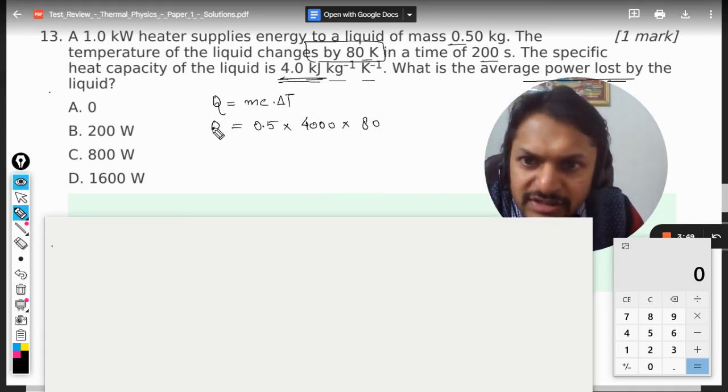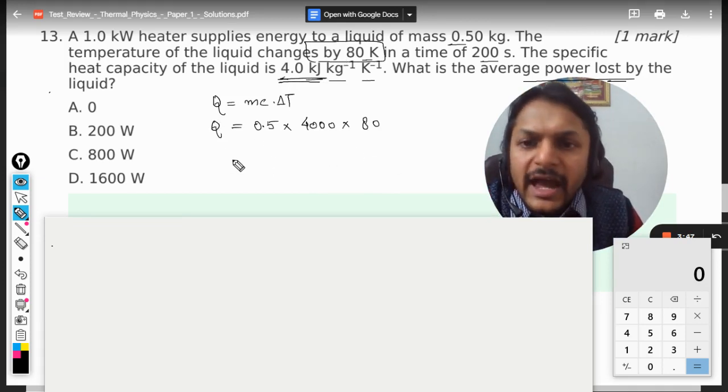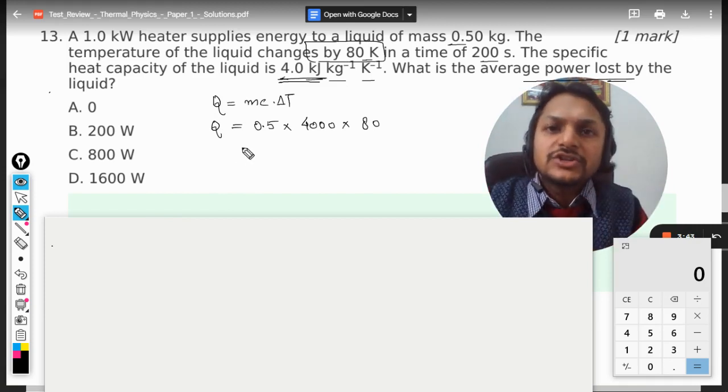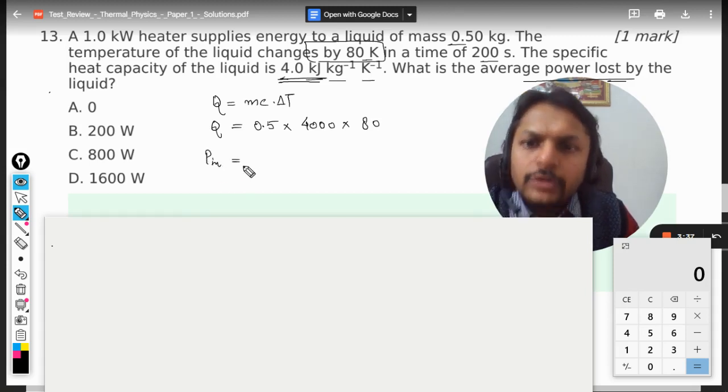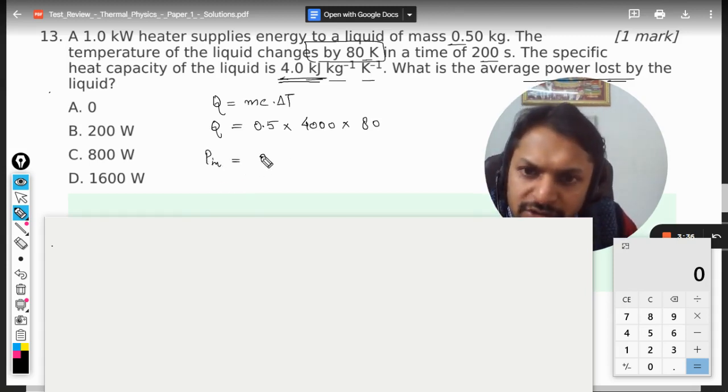So this is your heat. We want to find the power consumed, so we have to divide it by time. Power absorbed by the water will be 0.5 multiply by 4000 multiply by 80 divided by the total time taken.